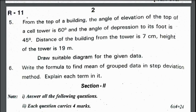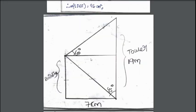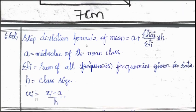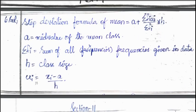From the top of a building, the angle of elevation of the top of a cell tower is 60 degrees and the angle of depression to its foot is 45 degrees. Distance of the building from the tower is 7 cm, height of the tower is 19 meters. Draw the suitable diagram for the given data. Diagram for the given question looks like this. Building height is 19 meters, given distance is 7, 45 degrees, 60 degrees. Sixth question, write a formula to find mean of grouped data in step deviation method. Formula is A + (ΣFᵢUᵢ / ΣFᵢ) × H, where A is mid value of the mean class, Fᵢ is sum of all frequencies, H is class size, Uᵢ is (Xᵢ - A) / H.